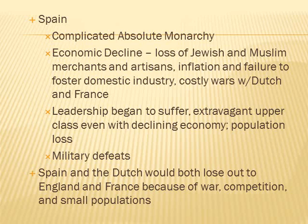Spain has a complicated absolute monarchy during this time period. It will suffer economic decline due to a loss of Jewish and Muslim merchants and artisans thanks to forcible expulsions. It will suffer from inflation and a failure to foster domestic industry. It will also have costly wars with the Dutch and the French, declining leadership, extravagance of the upper class even with the declining economy, population loss, and military defeats. Spain and the Dutch would both lose out to England and France because of war, competition, and small populations during this time period of state consolidation.